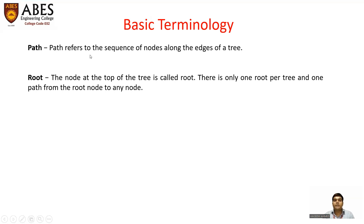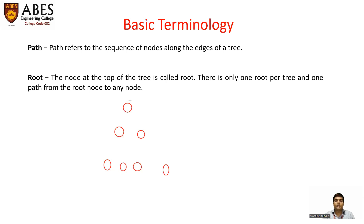First, we have the term path. Path is a sequence of nodes along the edges of a tree. I am going to explain this with the help of an example by drawing a tree with some nodes connected by edges. Path refers to the sequence of nodes along the edges of a tree.